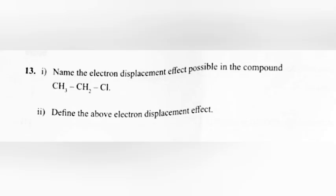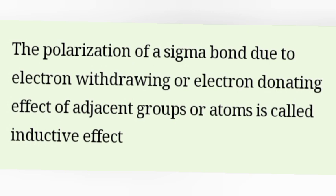Question 13: 1. Name the electron displacement effect possible in the compound. 2. Define the above electron displacement effect. Answer: 1. Inductive effect or I effect. 2. The polarization of a sigma bond due to electron withdrawing or electron donating effect of adjacent group or atoms is called inductive effect.